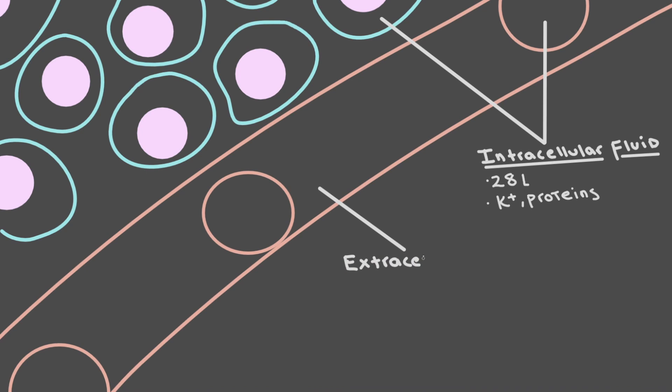So fluid that you find outside your cells is known as extracellular fluid. Extra meaning outside. But specifically this extracellular fluid that you find in your blood vessels is known as plasma. And the plasma typically accounts for on average about three liters of fluid and is high in things like sodium and chloride.